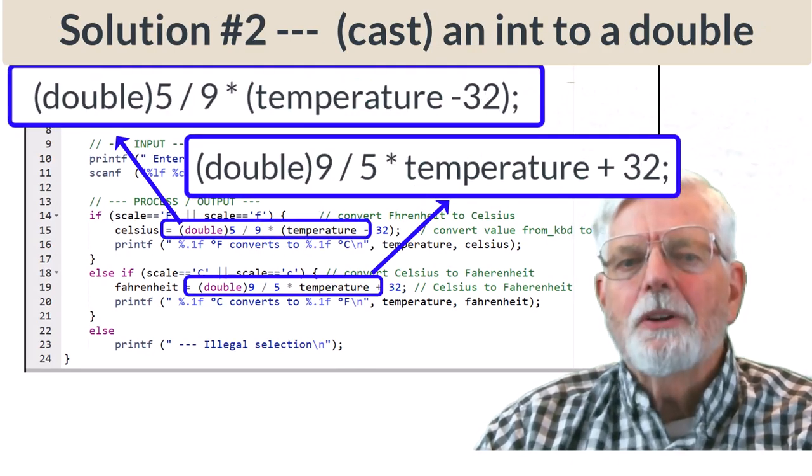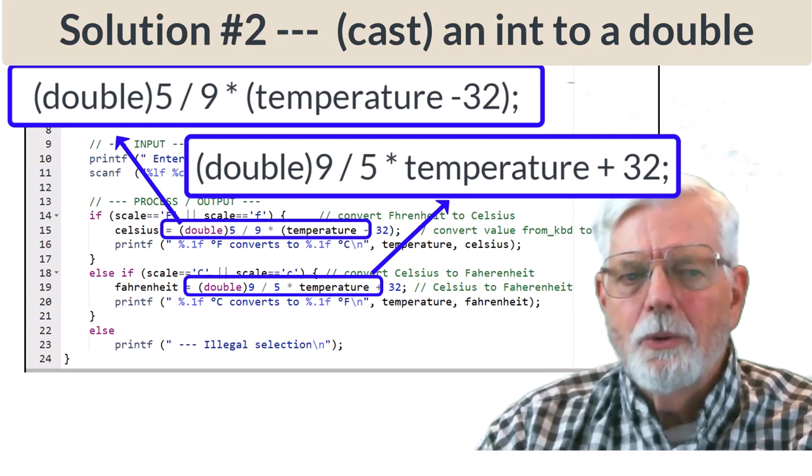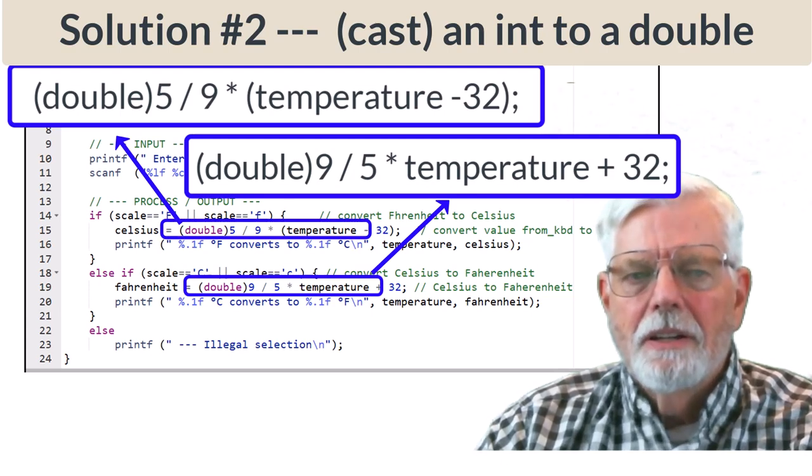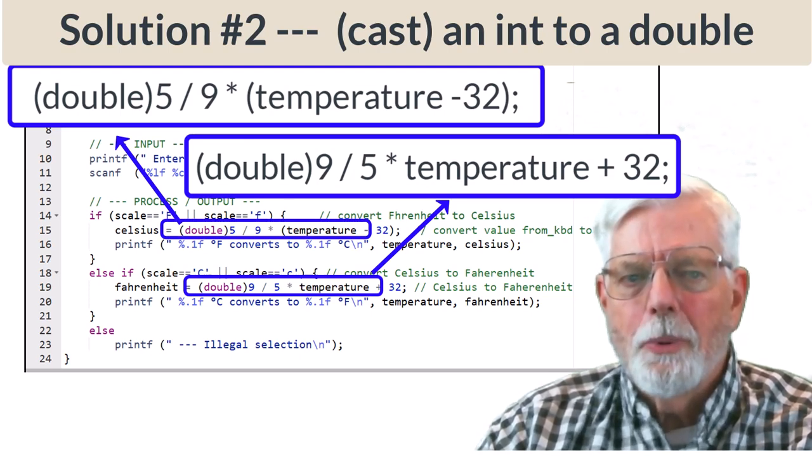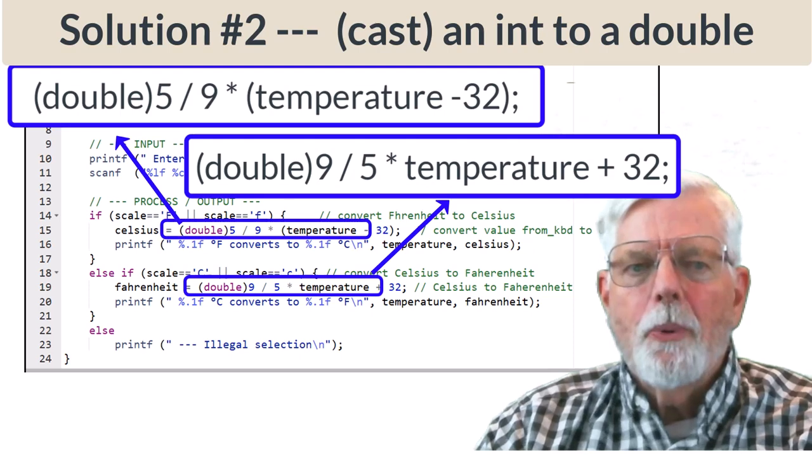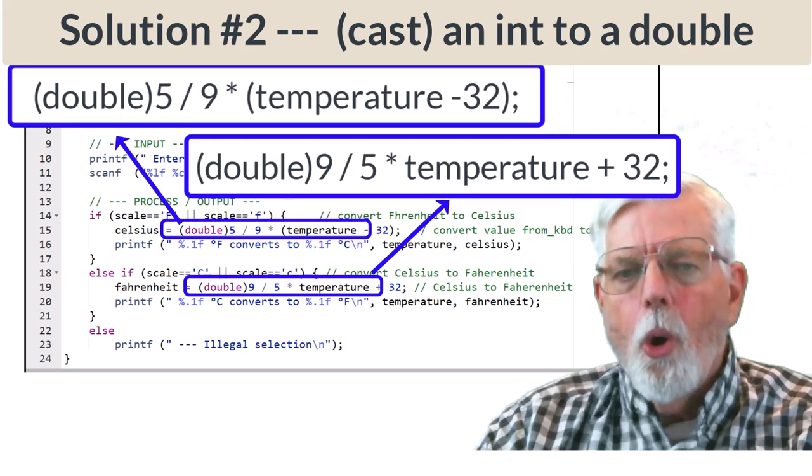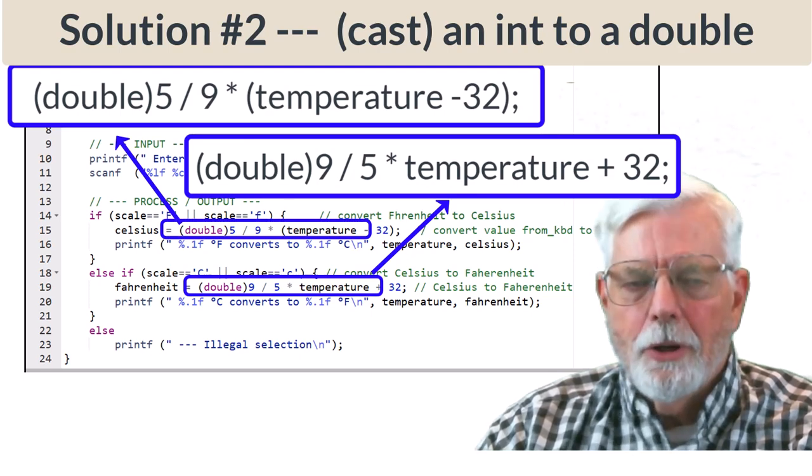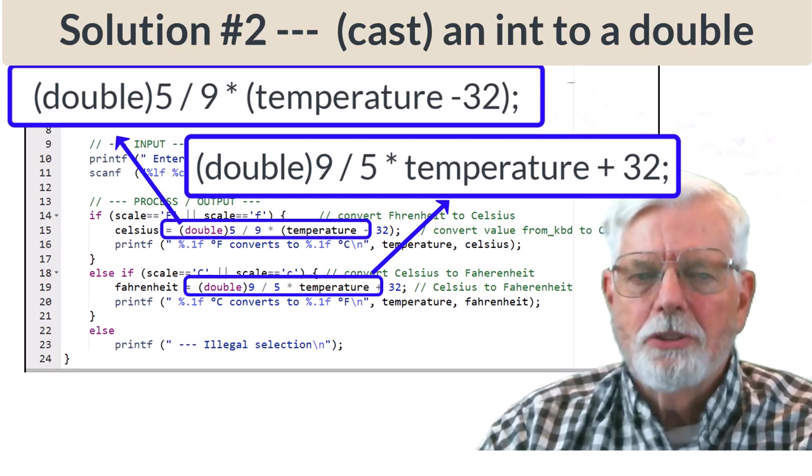The second way to solve the problem is to cast either or both the 5 and the 9 into a double. Open parenthesis, double, close parenthesis, 5 divided by 9 times open parenthesis, temperature minus 32, close parenthesis. The open parenthesis, double, close parenthesis, cast operator only treats the 5 as a double during this one computation and does not change the 5 into a double later in the code. A cast operator can be placed in front of variables as well as constants or literals.